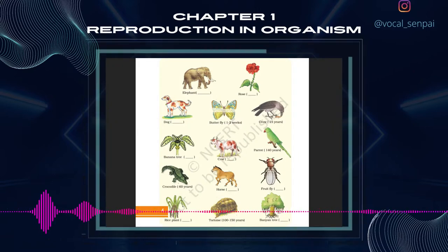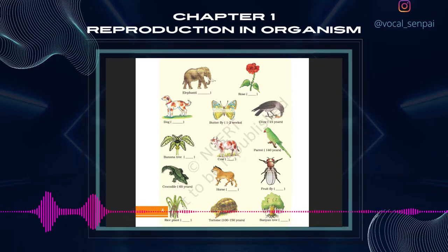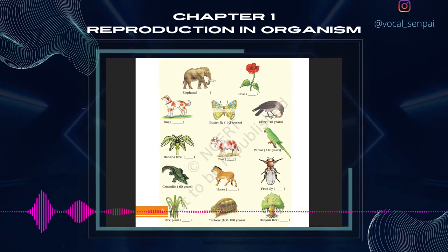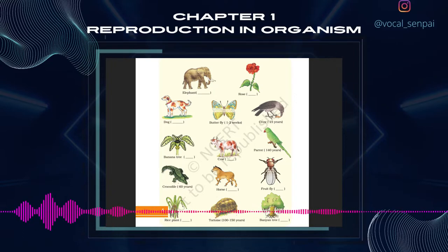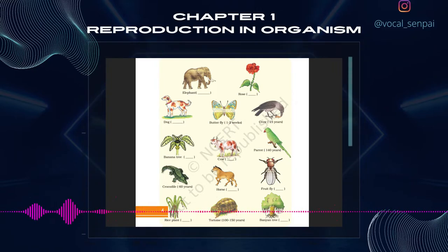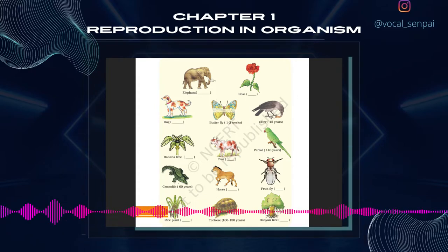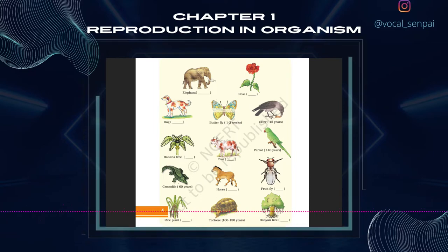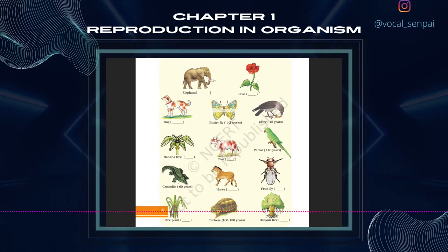Chapter 1: Reproduction in Organisms. Each and every organism can live only for a certain period of time. The period from birth to the natural death of an organism represents its lifespan. Lifespans of a few organisms are given in figure 1.1. Examine the lifespans of organisms represented in the figure. Isn't it both interesting and intriguing to note that it may be as short as a few days or as long as a few thousand years?